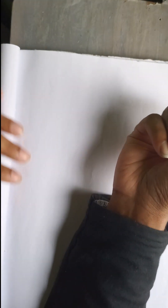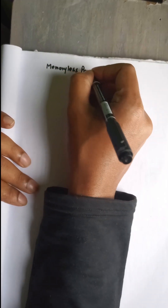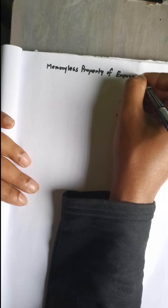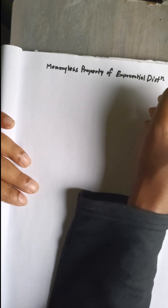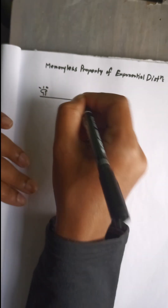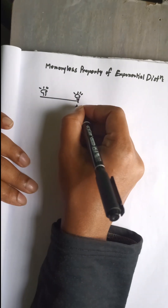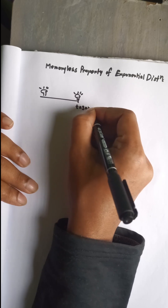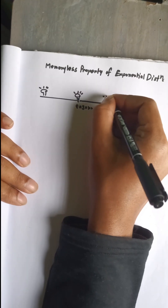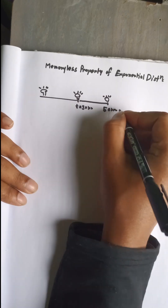Hello everyone, today we will understand the memoryless property of exponential distribution. Let's understand the concept first. Suppose there is a light bulb which has survived up to time t — say t is equal to 30 hours — and it has already survived up to say 50 hours.